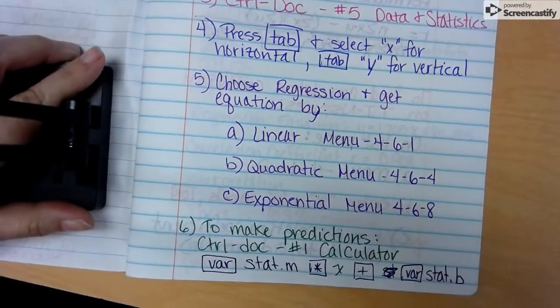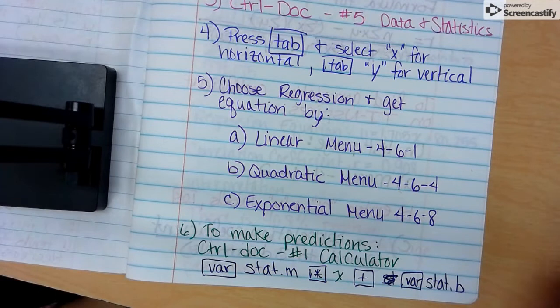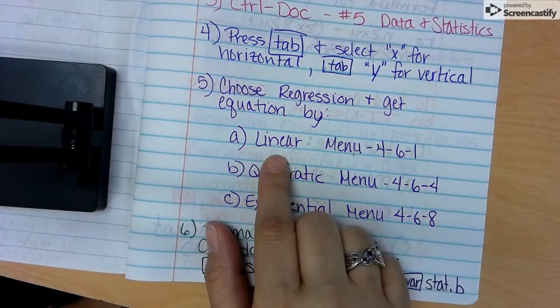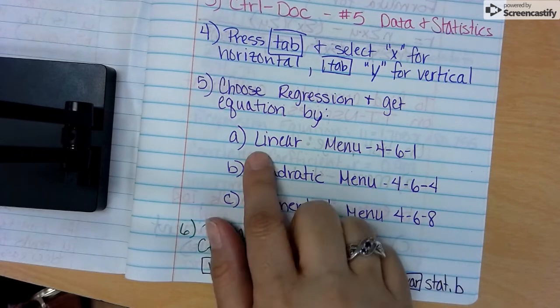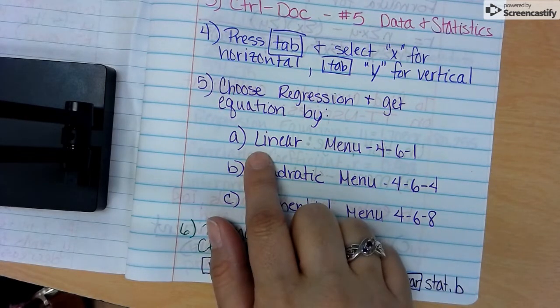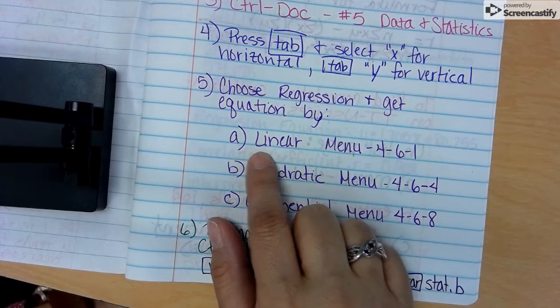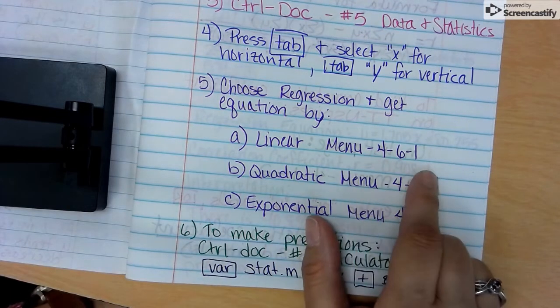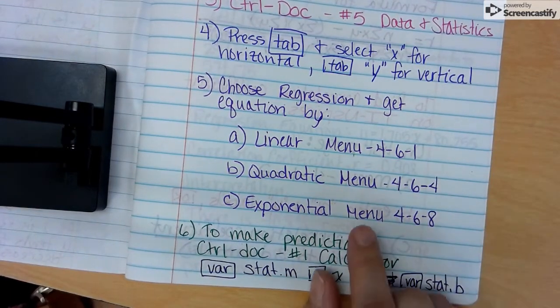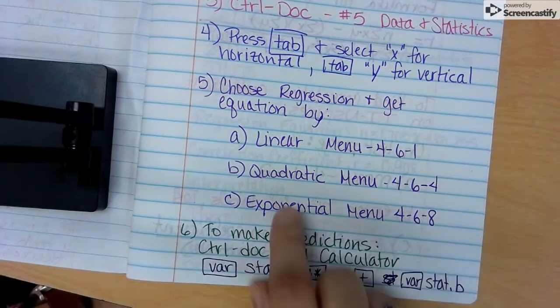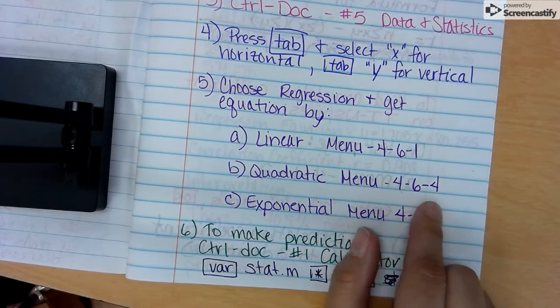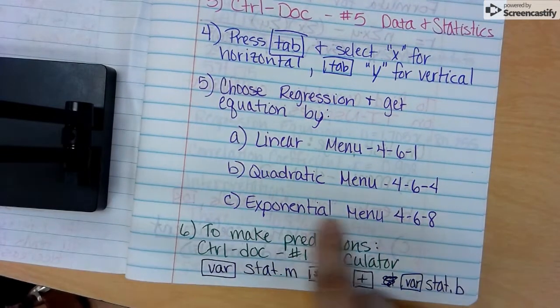That is how you would draw a scatterplot. Once we get the scatterplot, we want to analyze it. If it appears to be linear - either that negative falling or positive climbing - we would want to choose the regression to get the equation. We would push Menu 4-6-1. If it looks to be a smiley face or frowny face, we would use Menu 4-6-4.